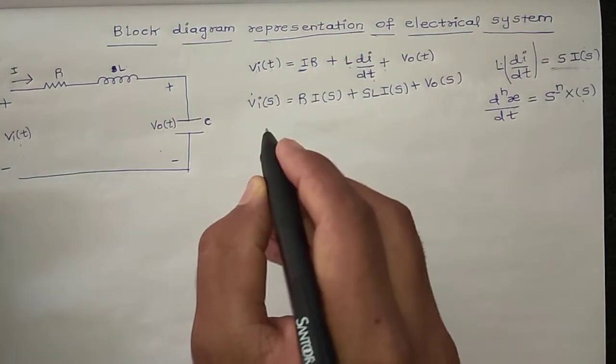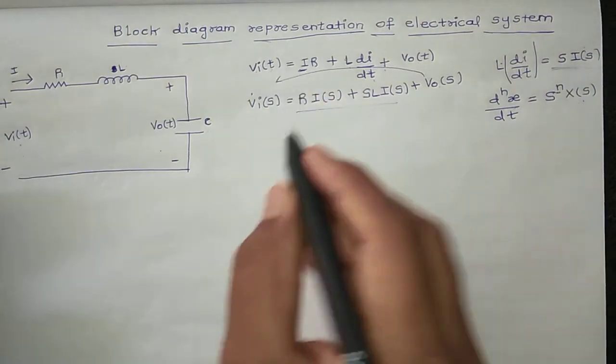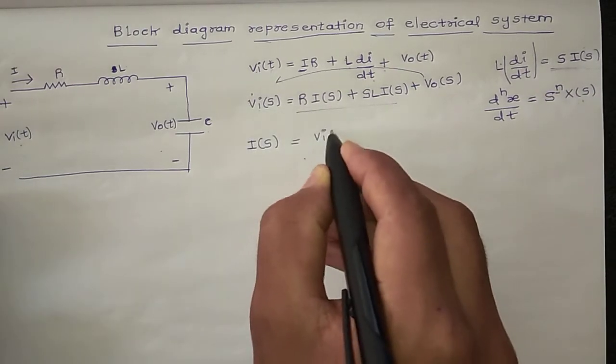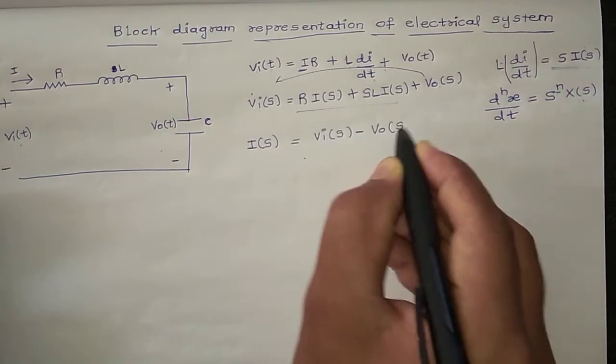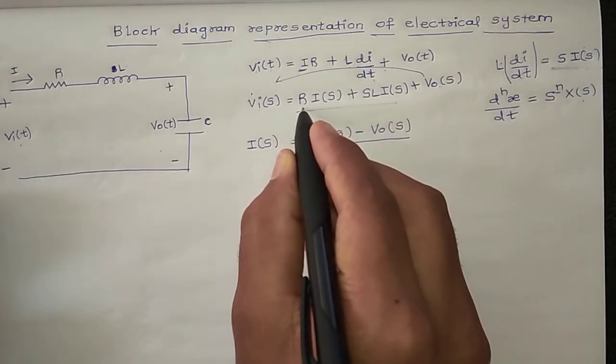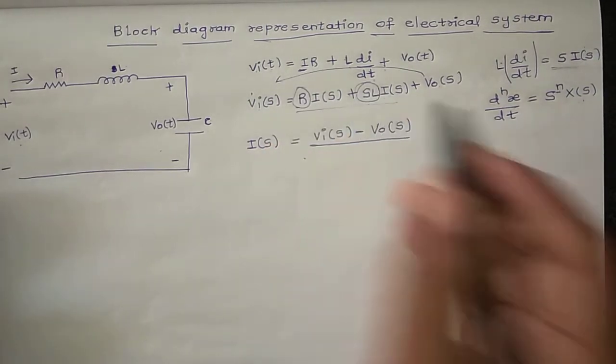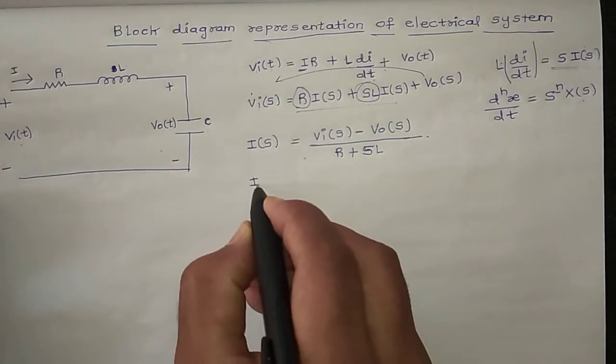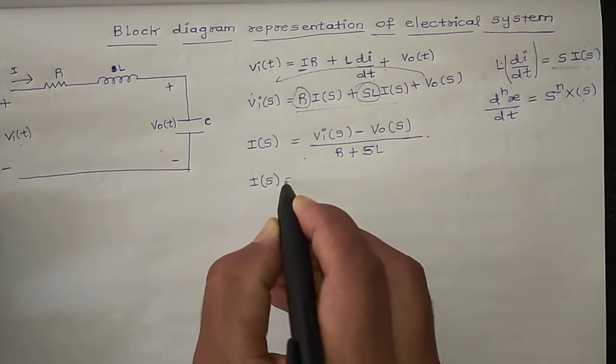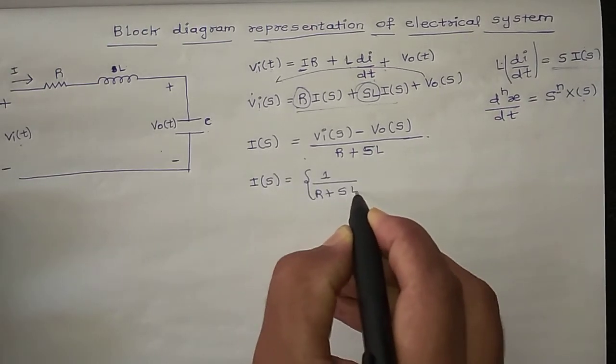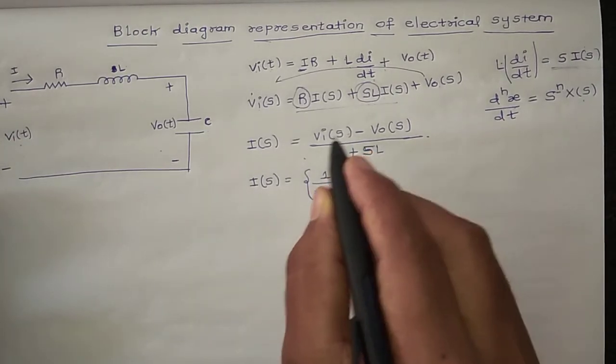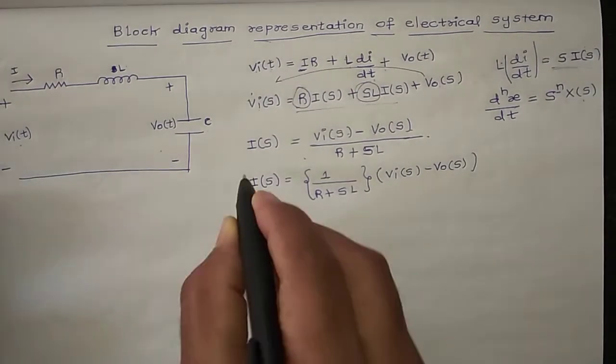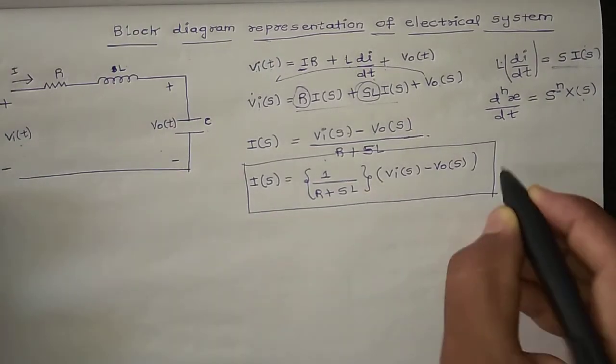This is after applying Laplace transform. So I can rewrite this as i(s) common. We get i(s) equals Vi(s) minus Vout(s) by, here this is common, here R and here SL. So R plus SL. So this is like i(s) equals 1/(R+SL) into two signals, Vi(s) minus Vout(s). So let it be equation number 1.